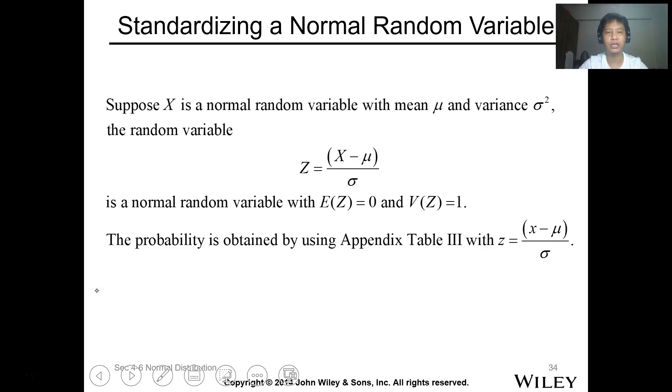Okay, so let's continue with lesson 4, continuous random variable, standardizing a normal random variable. Suppose that x is a normal random variable with mean mu and a variance of sigma squared. The random variable could be standardized using this equation, where the z value is equal to x minus mu over your sigma. Then this is going to be your z equals 0 and the variance to be equal to 1. So the probability is obtained using appendix table 3 with this z value.